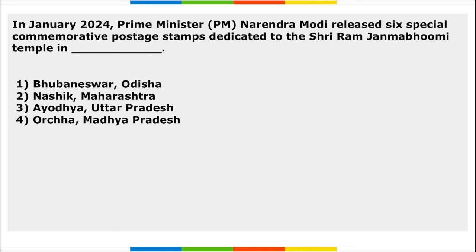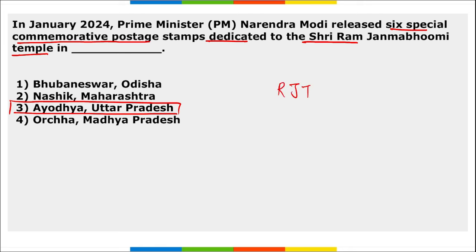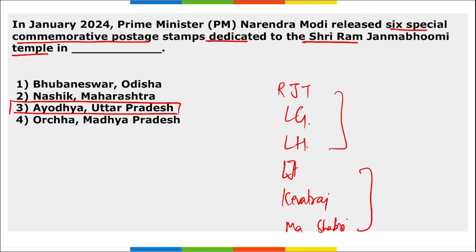Prime Minister Narendra Modi released six special commemorative postage stamps dedicated to the Shri Ram Janmabhoomi Temple located in Ayodhya, Uttar Pradesh. The six distinct stamps depict the Ram Janmabhoomi Temple, Lord Ganesha, Lord Hanuman, Lord Jatayu, Kevat Raj, and Ma Shabri.